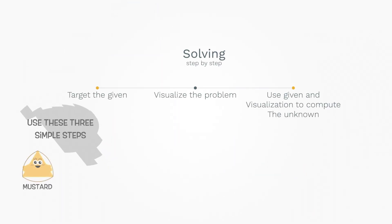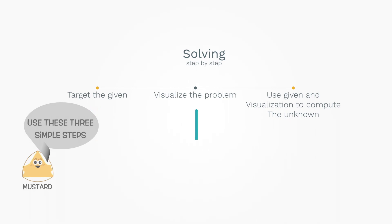We only need to do three simple steps to solve this problem. First, we should identify the necessary information given in the problem and list them down. Second, we should visualize the problem by creating illustrations to have a better understanding. Lastly, we will use the given information and the illustration we've made to crack the problem and find the answers.